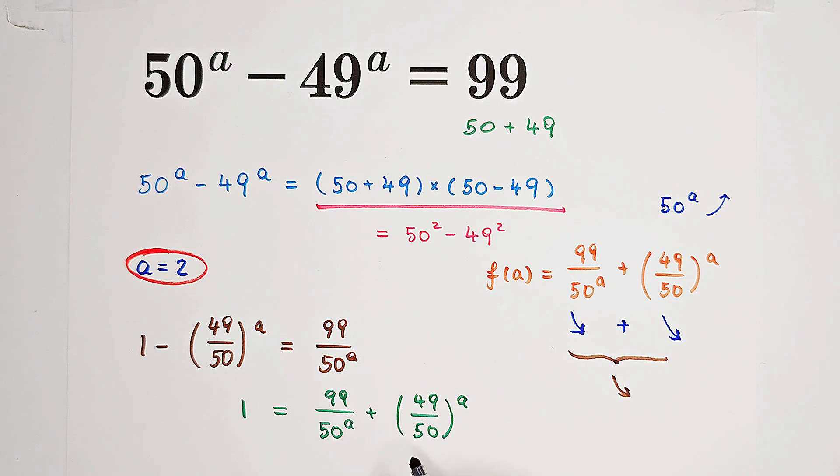That means our right-hand side is just a function which is monotonically decreasing. While our left-hand side is a constant function, f of A equals 1. Very good. So now, how many solutions does our this equation have?